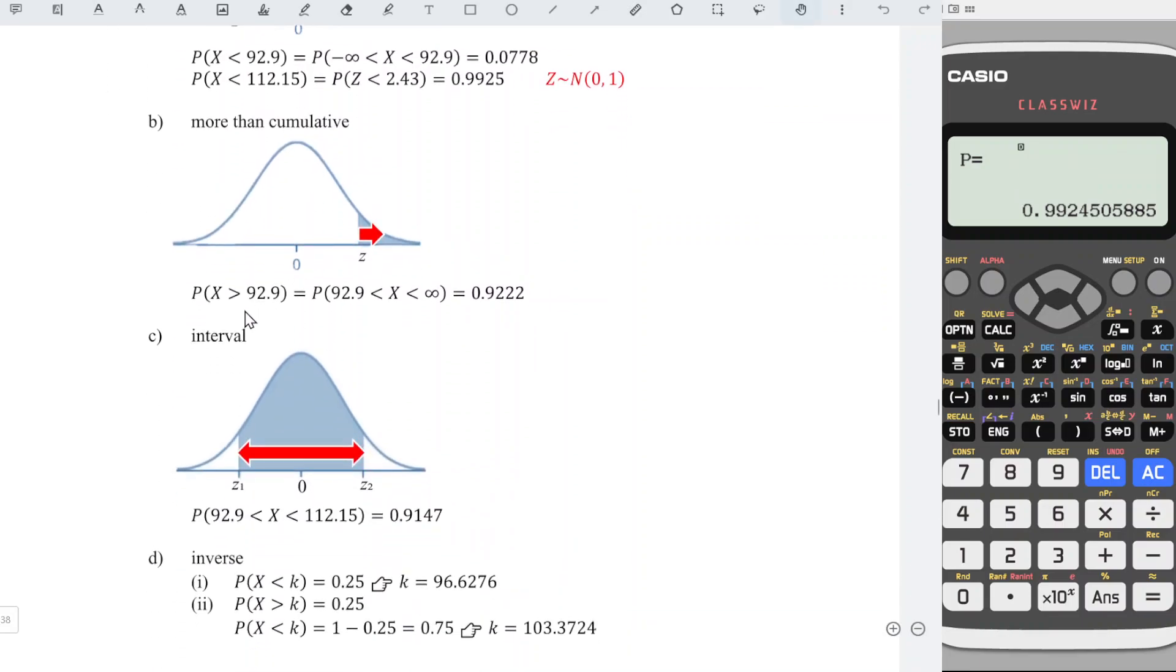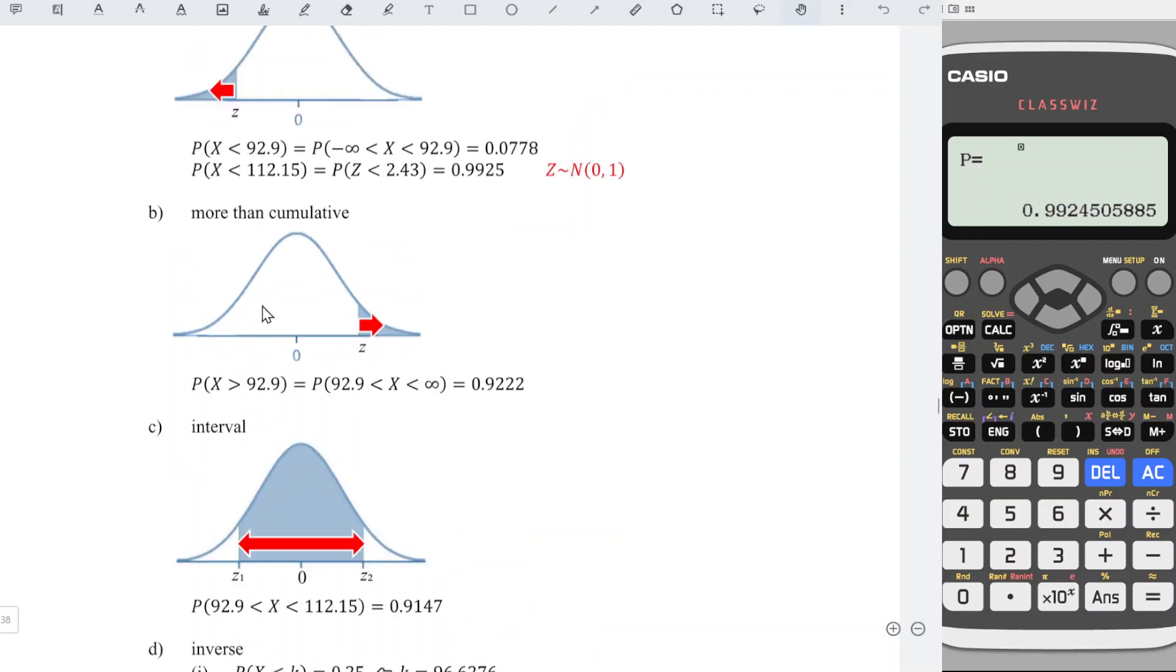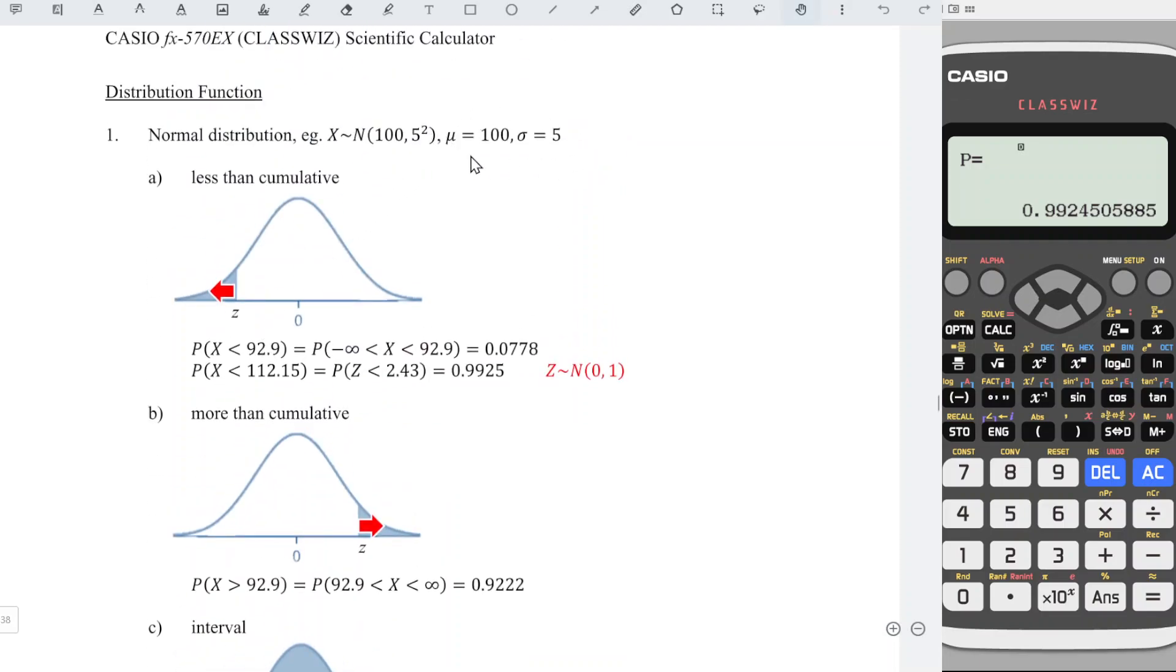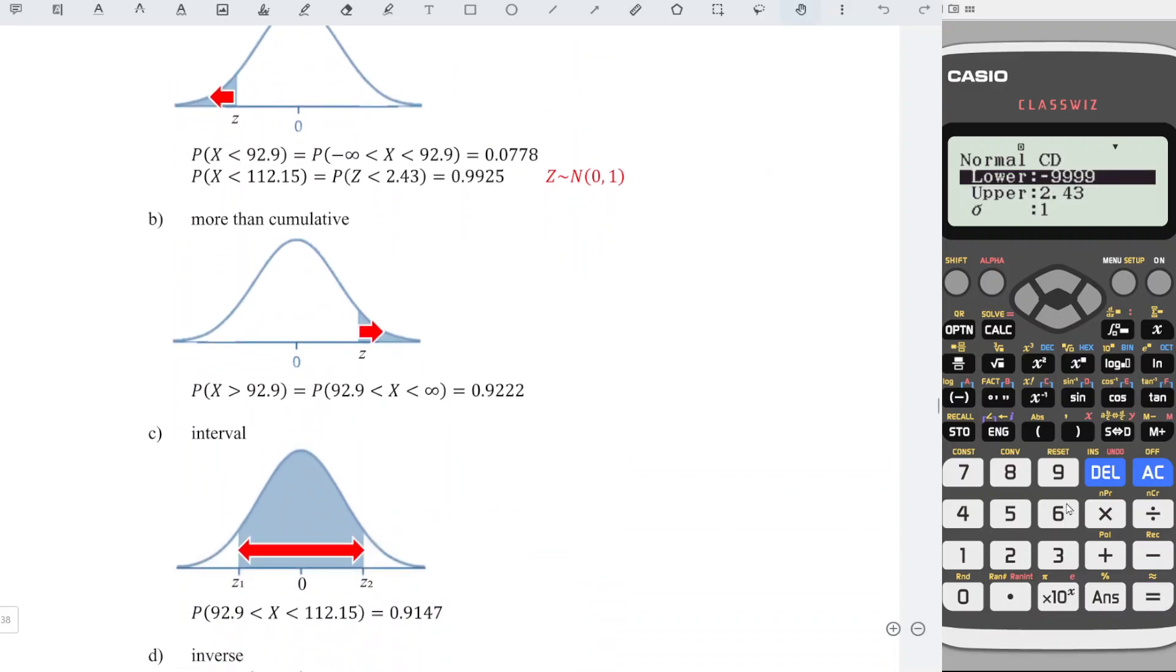For more than cumulative, if we are not going to input standardized value, we have to use back the parameters given by the question. So we have equal again. Since this is more than cumulative, which means that the value given is the lower bound: 92.9. Upper limit: change to positive infinity. Take as many 9s as possible. Sigma given by the question: 5. Mu: 100. Press equal to obtain the correct probability.